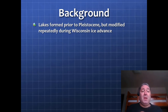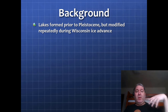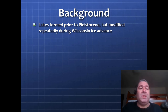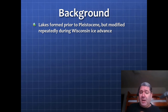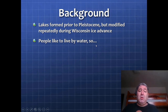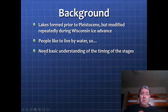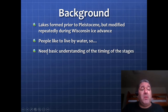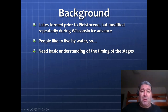As a little background: lakes formed prior to the Pleistocene with the previous advances of the ice sheets, but they were modified repeatedly during the last glacial advance — the Wisconsin ice advance stage. It's important to remember that people like to live by water, so where people lived has a lot to do with these paleo or old shorelines. We need a basic understanding of the timing of these different lake stages to figure out who was where when.